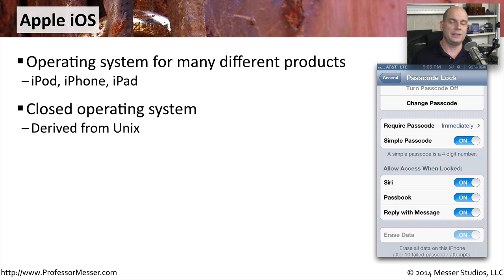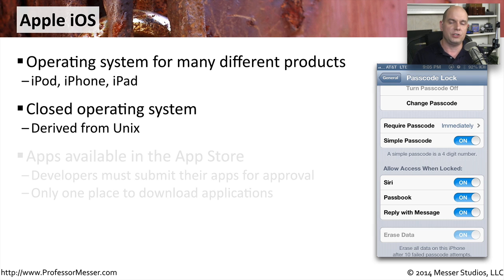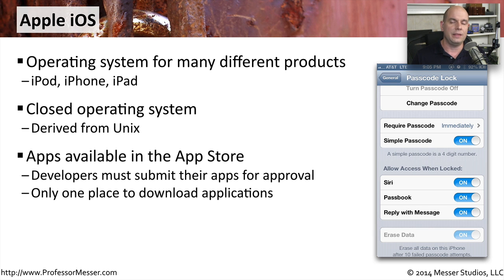The iOS operating system was originally derived from Unix, so if you had a way to look under the hood, you would see a Unix engine at the heart of iOS. If you need to get applications to run on this particular platform, then you need to get them from Apple's App Store. There's one place to go to get any downloads you would need to run on this device — it is very centralized. Developers must submit their application to the App Store so that all users can then download it, and there's no other mechanism in place to get applications for these iOS devices.